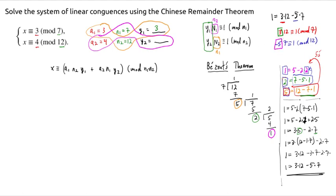Inverse of 7 mod 12. That means it's Y2. So that's negative 5, negative 5 mod 12. It could also be written as positive 7. Could be positive 7. But now, once we have these numbers, this is the hardest part, computing these two numbers.